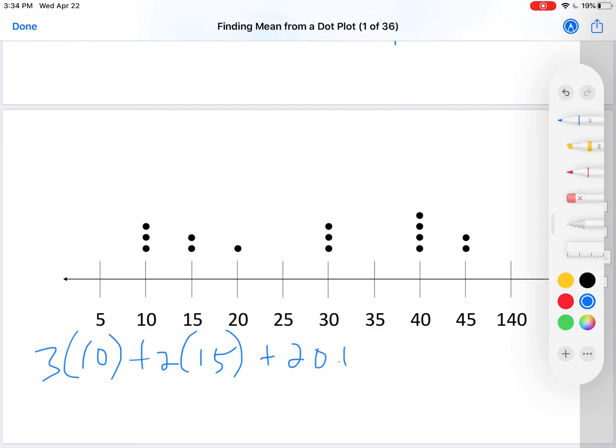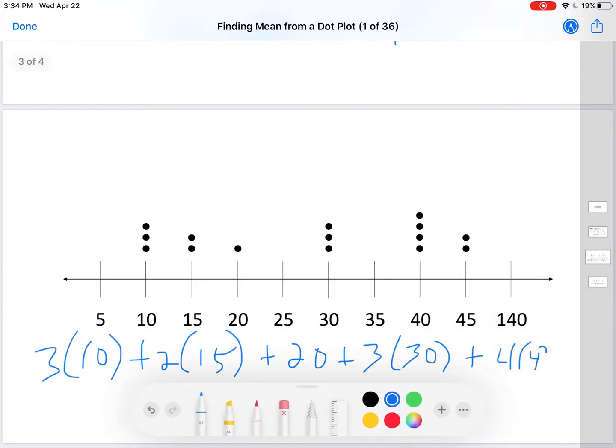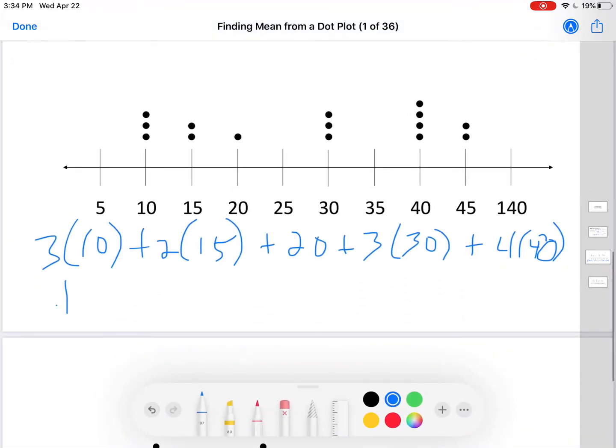So 3 times 10 plus 2 times 15 plus 20 times 1, but that's just 20, plus 3 times 30 plus 4 times 40 plus 2 times 45. I'm going to use a calculator on this. I hope you have a calculator handy.